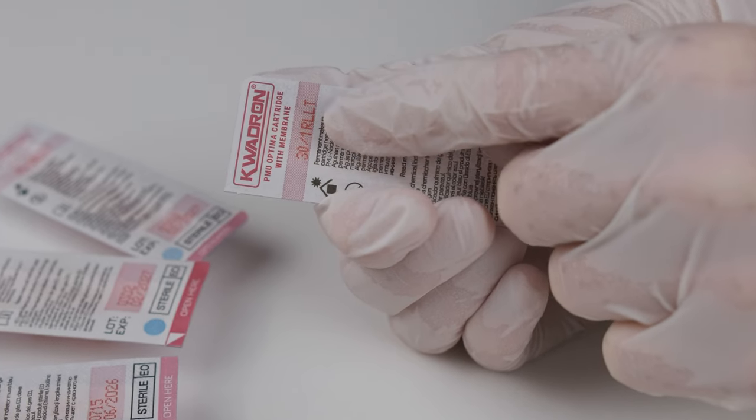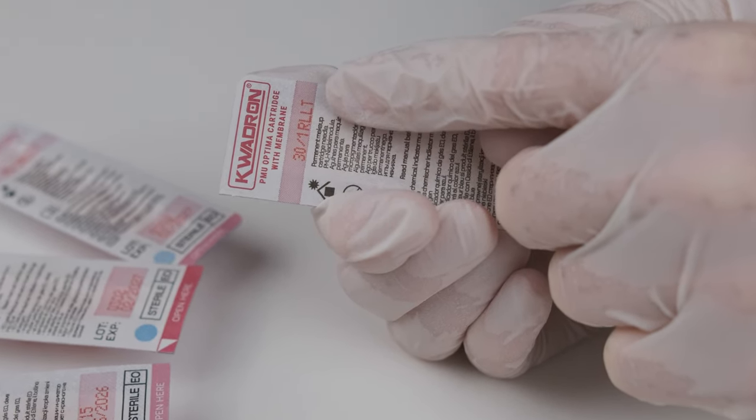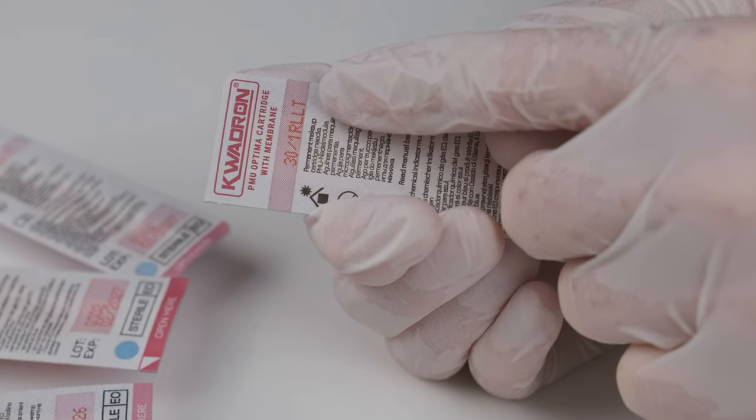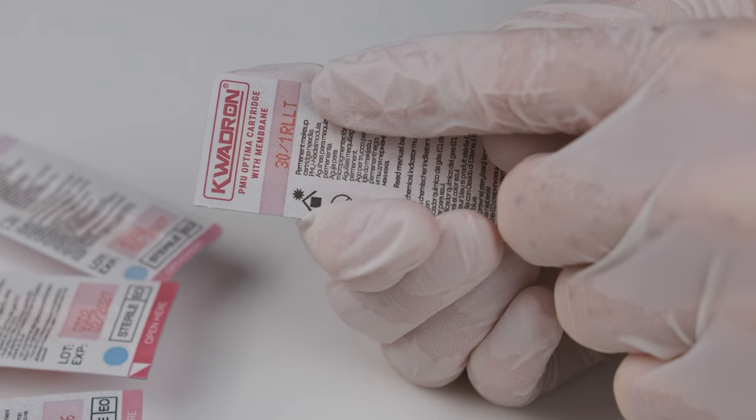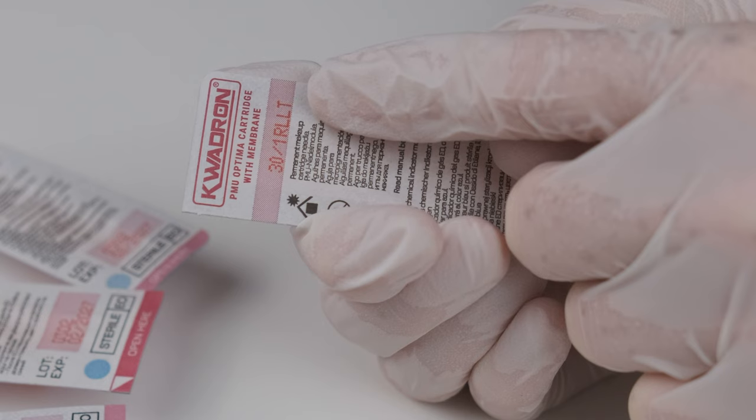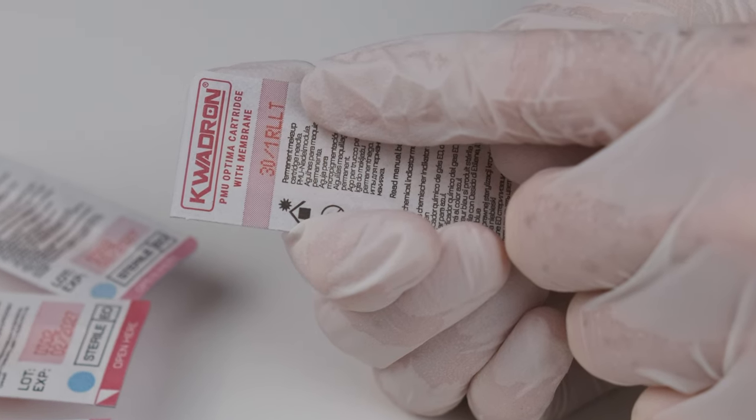RLLT means round liner, long taper. RL is arrangement of needles and LT is some kind of taper. We can also find medium tapers, short tapers, ultra short tapers, or extra long tapers.